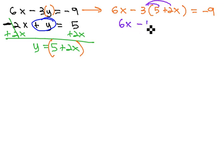It gives us 6x minus 15 minus 6x equals negative 9, and then when we combine like terms, 6x minus 6x, we get 0. The x's have subtracted out completely, and we're left with negative 15 on the left side, and negative 9 on the right side.